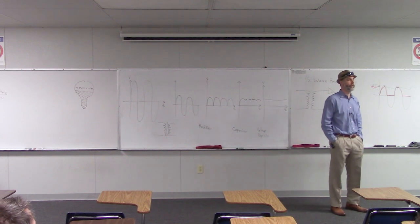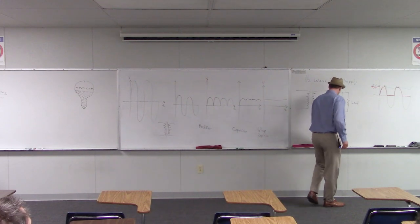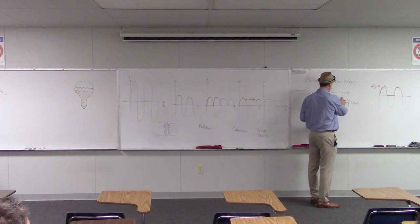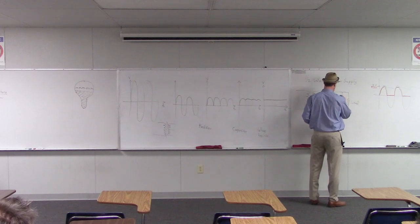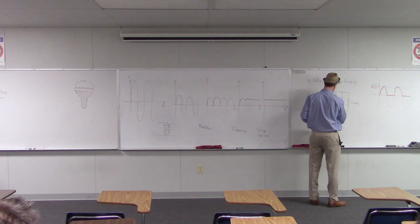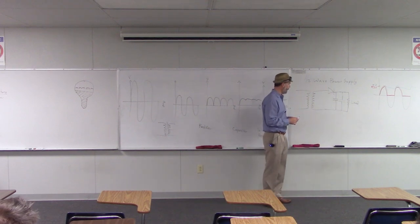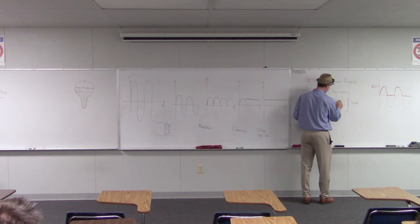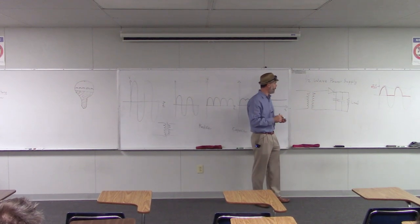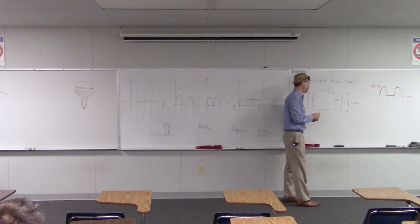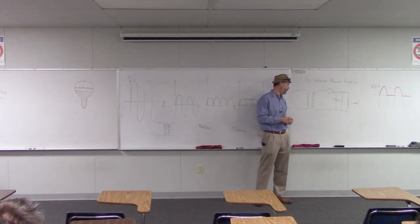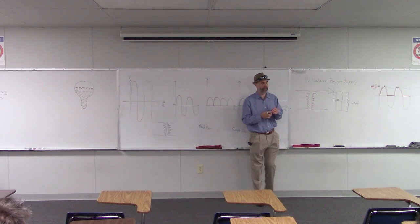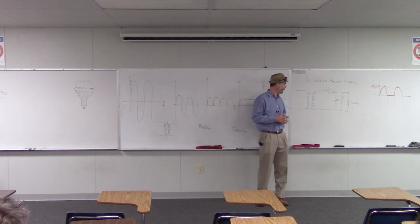If you put capacitors in parallel, it's essentially like having one larger capacitor - the total capacitance is just the sum of the two capacitors. They add up almost like resistors in series. It turns out that if you put capacitors in series, you have to use that reciprocal formula like we do with resistors in parallel - it's a sort of opposite relationship.